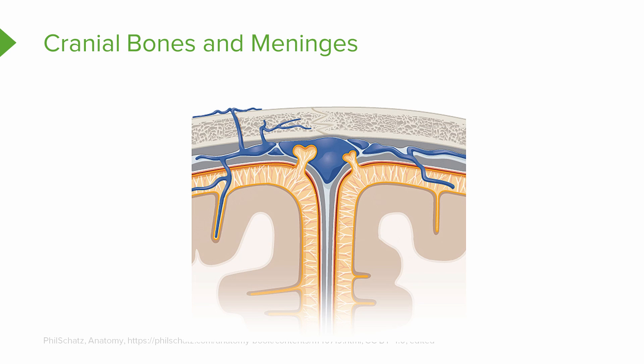If we take a closer look at the meninges of the brain, we will notice that we have the arachnoid mater, which is very similar and continuous with the arachnoid mater of the spinal cord. Just deep to the arachnoid mater, we have what's known as the subarachnoid space. This space is important because this is where the cerebrospinal fluid is going to be located.